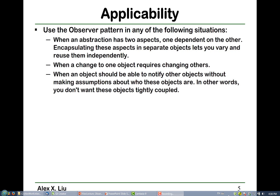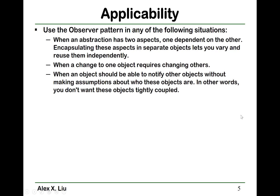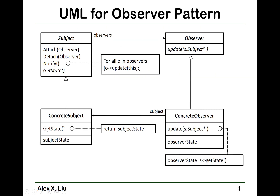The one that initially changes is called the subject, and the others that change based on it are called observers. The third scenario is when an object wants to notify other objects without making assumptions about what those objects are — in other words, you don't want these objects tightly coupled. Based on the UML diagram, the concrete subject doesn't care what its concrete observers are, as long as they conform to the same interface.